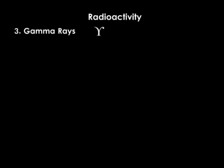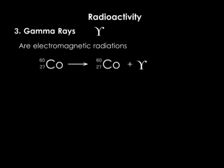Gamma rays are not particles, but rather are electromagnetic radiations that usually accompany the emission of alpha or beta particles. Some nuclides might be in an excited state and to achieve stability, they may emit energy in the form of gamma radiation without producing new isotopes. For example, cobalt-60 and thorium-230.